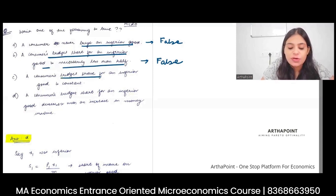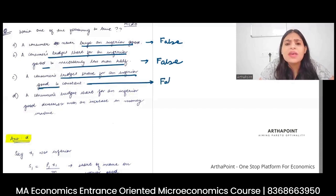A consumer's budget share for inferior good is constant, not necessarily the case. As my income changes, the share of my money that I spend on inferior good can change. So it's incorrect.